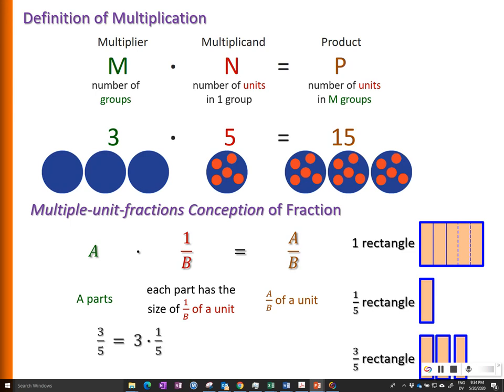As we have seen, three-fifths can be understood as three times one-fifth. This is related to conceptualizing multiplication as repeated addition. Three times five can be seen as five plus five plus five. So three times one-fifth can be seen as one-fifth plus one-fifth plus one-fifth.